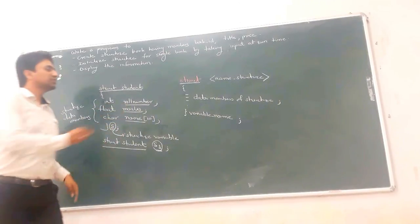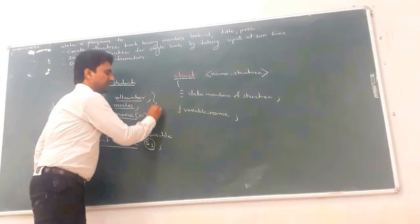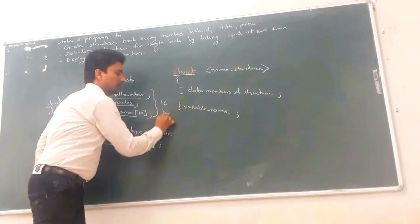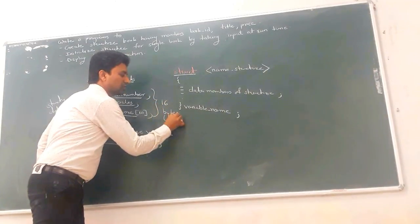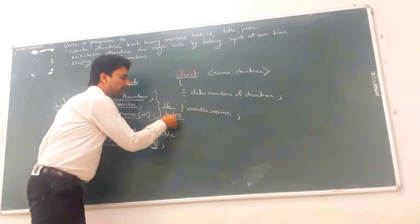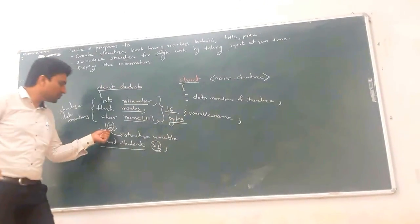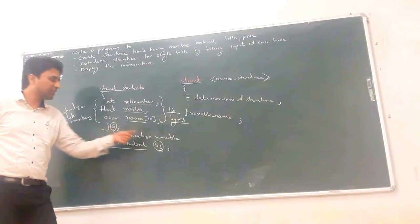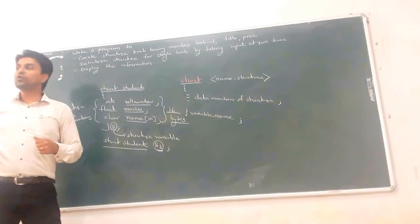There are three data members: for the character array, 10 bytes are reserved; for float, 4 bytes; and for integer, 2 bytes. So in total, 16 bytes are reserved for the structure variable S or S1.